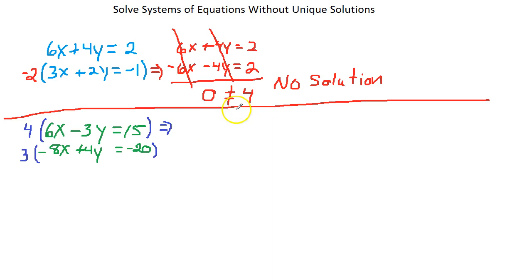Alright, 4 times 6x is 24x, 4 times negative 3y is negative 12y, 4 times 15 is 60.